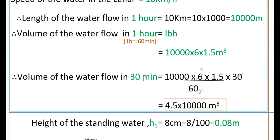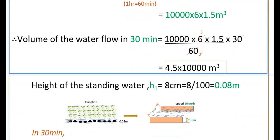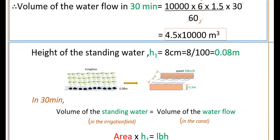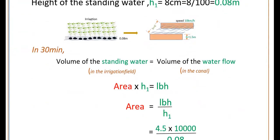This is the volume of the water flow in 30 minutes from the canal. The height of the standing water is given as h1 equal to 8 centimeters. Converting to meters: 8 by 100, that is 0.08 meters. In 30 minutes, volume of the standing water in the irrigation field is equal to volume of the water flow from this canal. The standing water is also in the shape of a cuboid, so that is L × B × H, where LB is the area to be irrigated. So: area into h1.